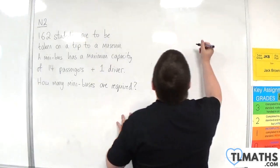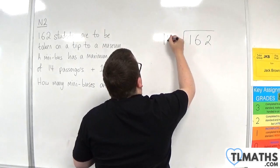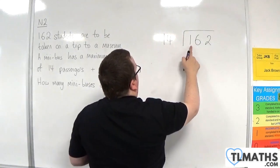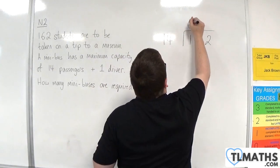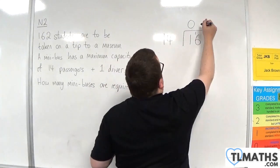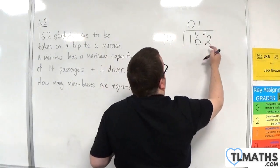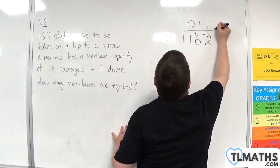So we need to do 162 divided by 14. Now 14 into 1 goes 0 with one remainder. 14 into 16 goes once with two remainder. And then 14 into 22 goes once, remainder 8.